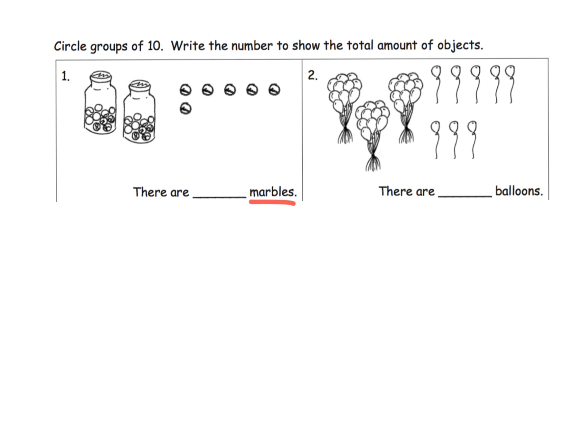So we're going to circle our groups of 10. There's two groups of 10. Now write the total number. Well, here's 10, here's another 10, so that's 20. So we're going to say 10, 20, and then 21, 22, 23, 24, 25, 26. So there are 26 marbles.